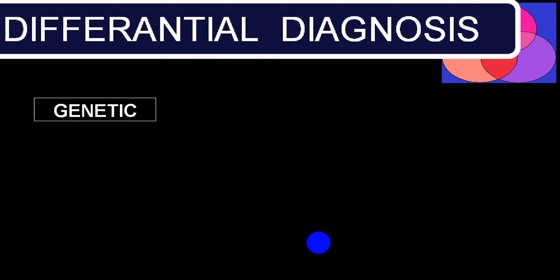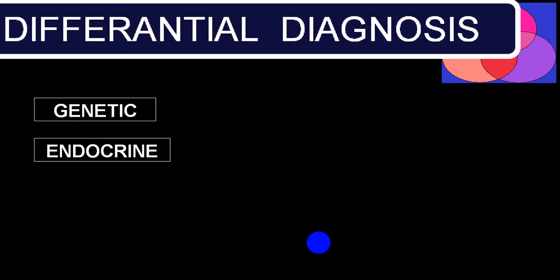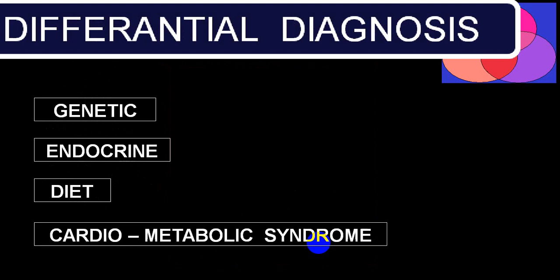For differential diagnosis, find out whether the etiology is genetic or endocrine, assess food habits, and try to rule out cardiometabolic syndrome.